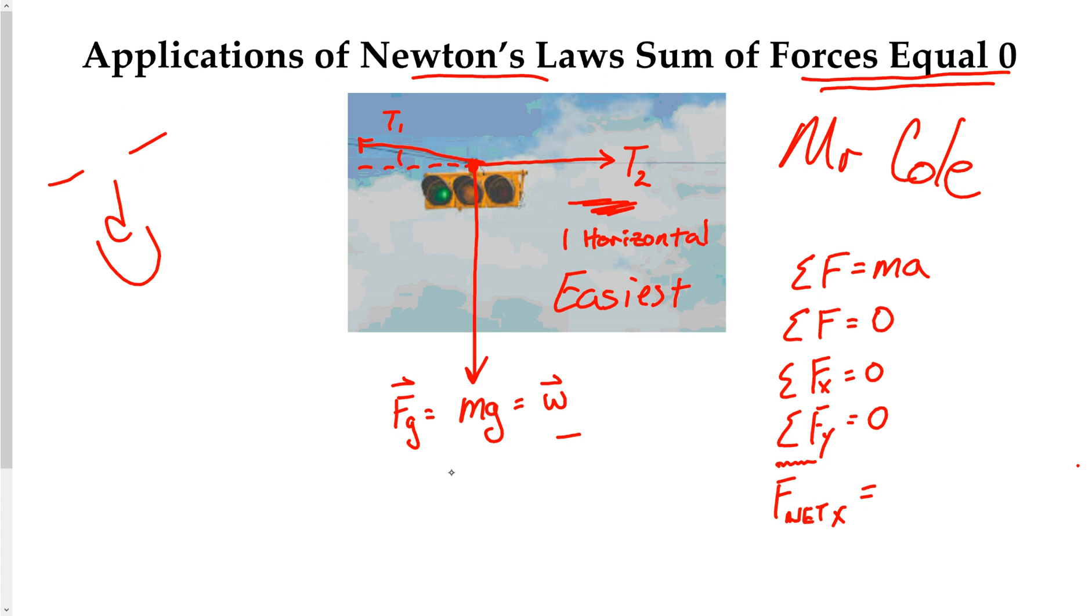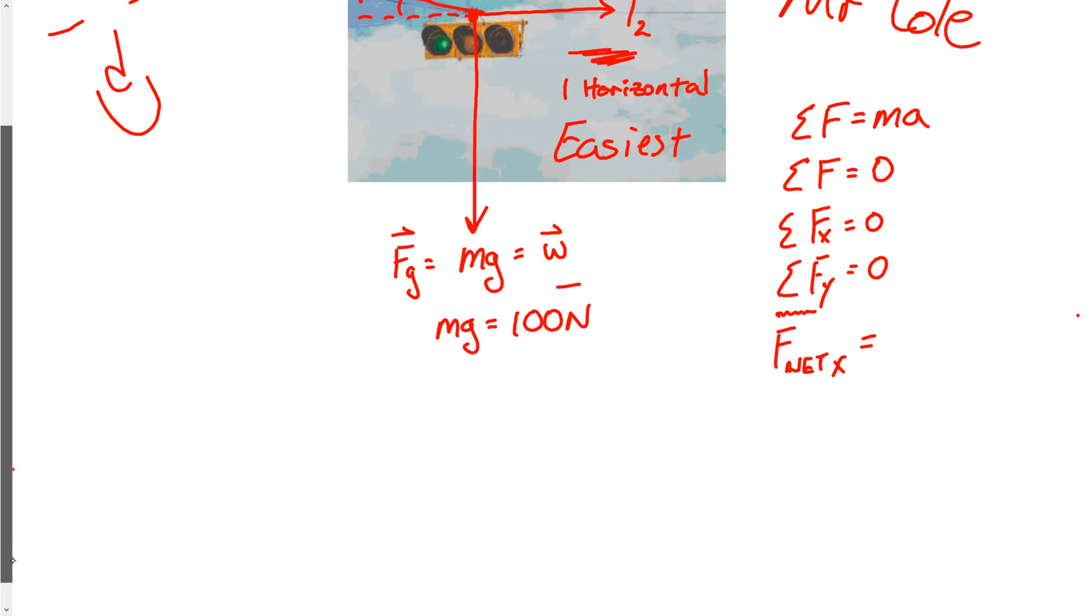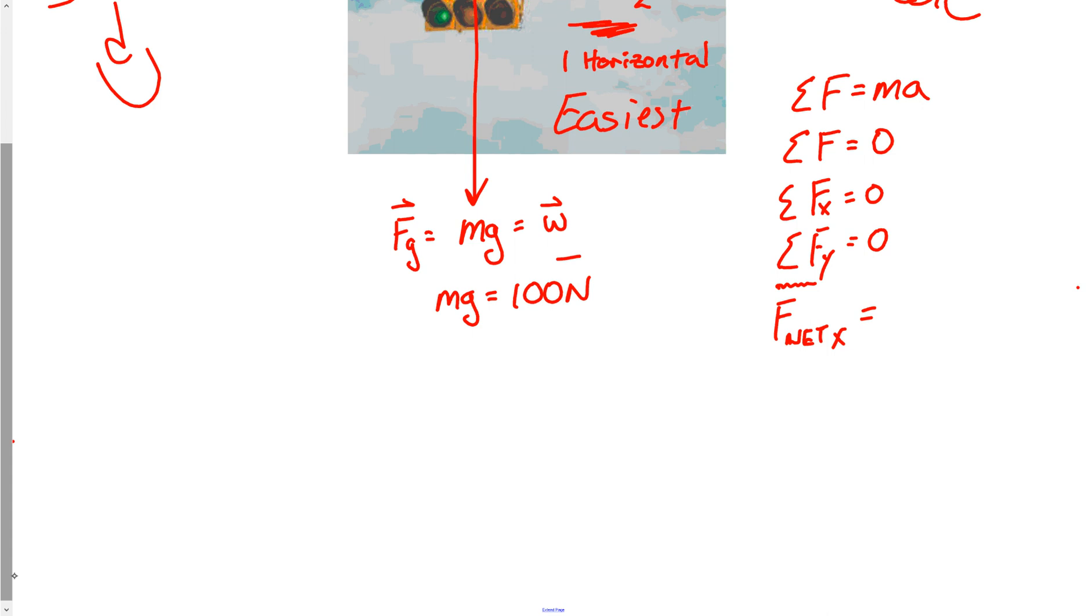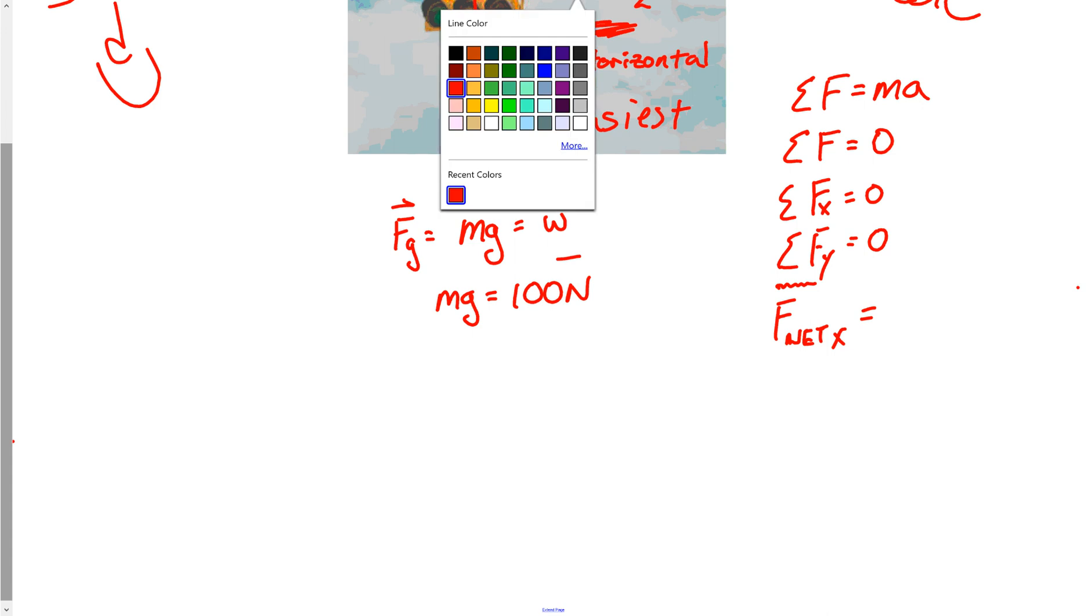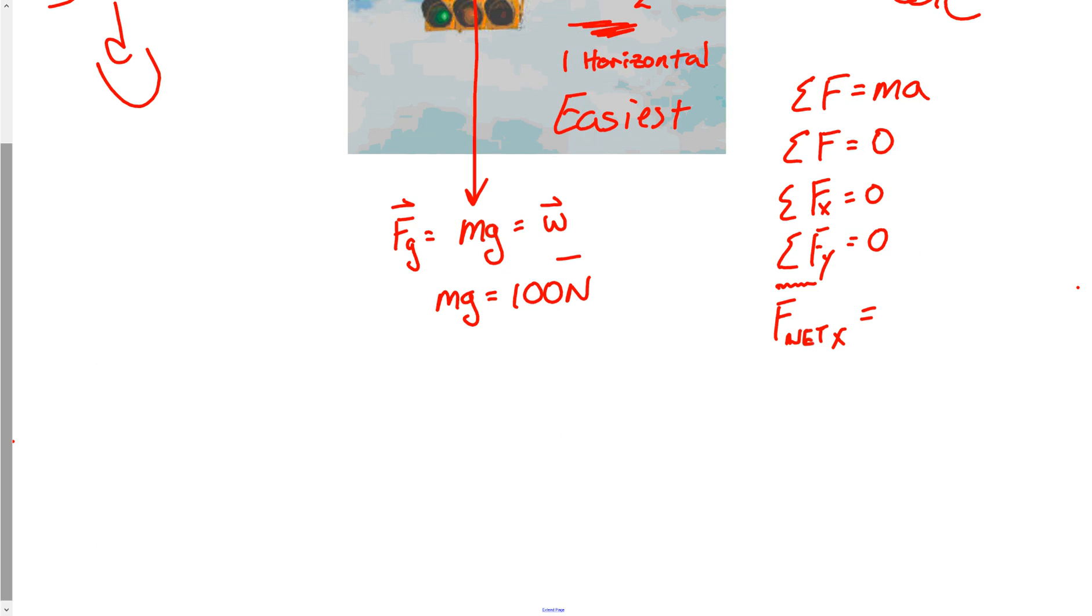So let's do something in this one. Let's just say that that stoplight has a weight of 100 newtons. So the force of gravity on that object is 100 newtons, the mg. First, let's do this. Let's start with a free body diagram. Because if you were in my class, I'd tell you, hey, if you don't have a free body diagram, I'm not even going to help you.